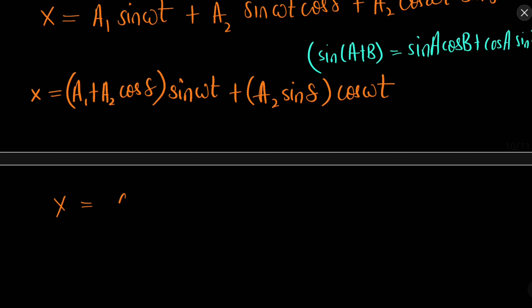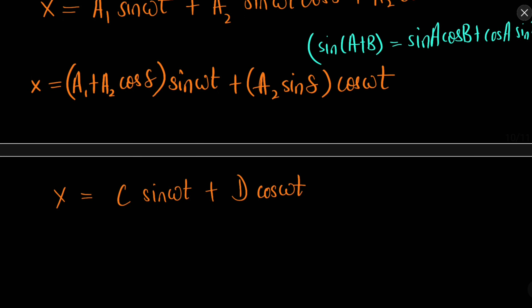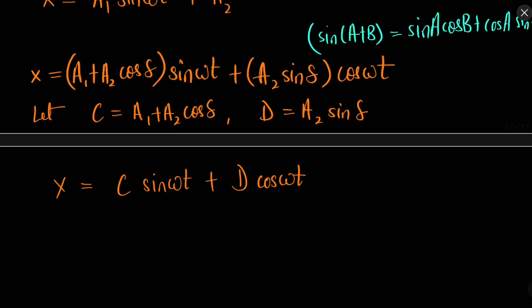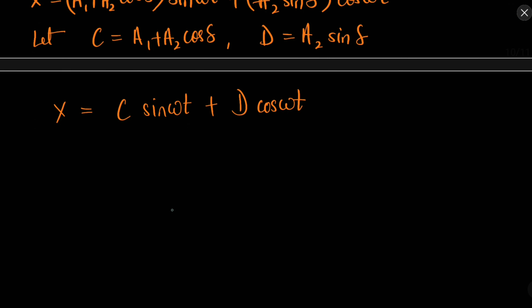Let us assume this to be C sin(ωt) + D cos(ωt), where C = A₁ + A₂ cos δ and D = A₂ sin δ. This is ultimately what we get.